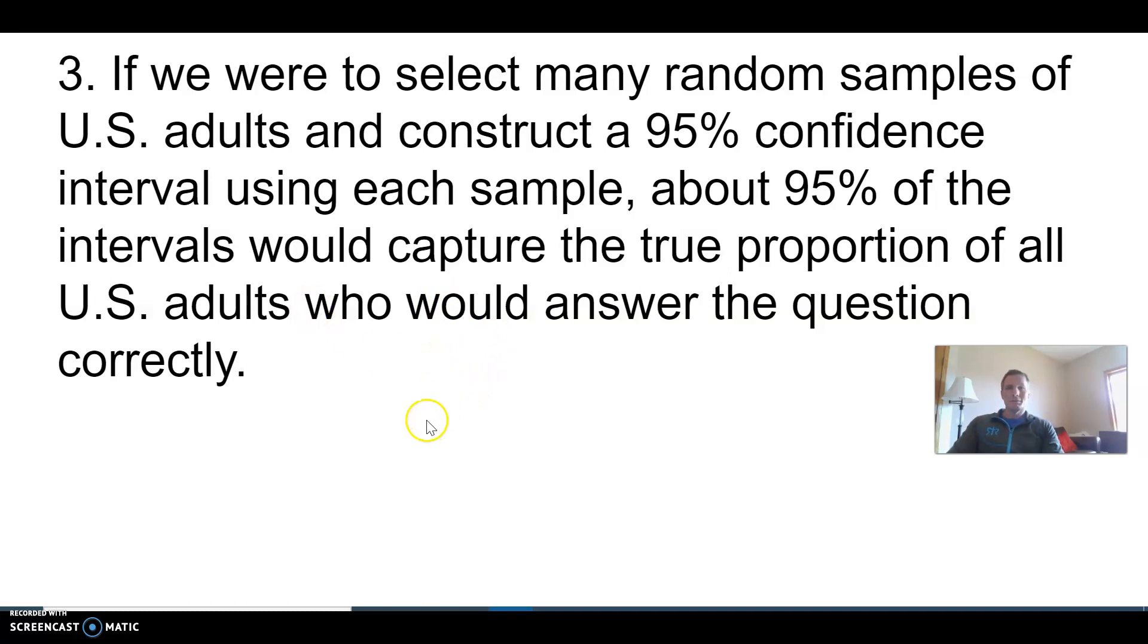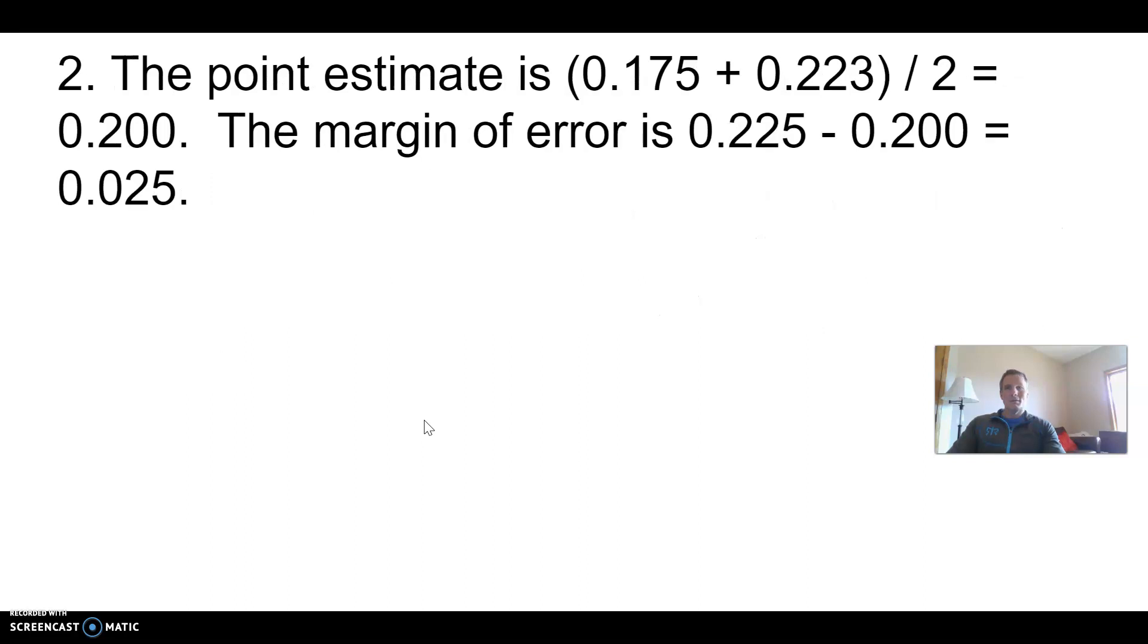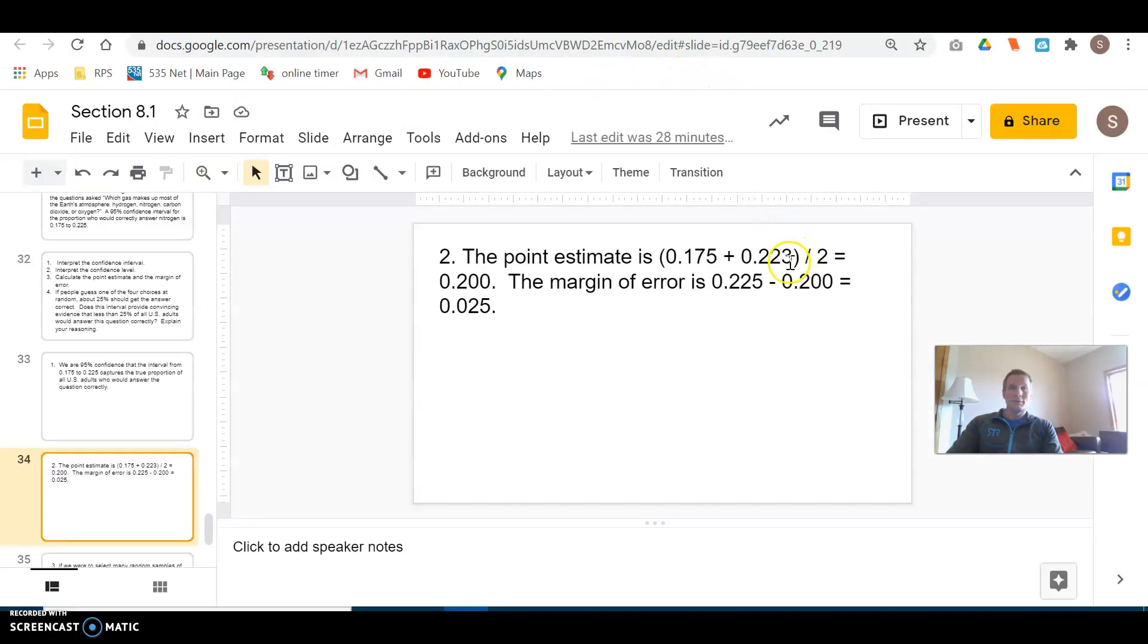Now the answer to number three. The point estimate - you've got to find it. Oh, that should be a 5, not a 3, sorry. You've got to average 0.175 and 0.225. Add them, divide by 2. Right in the middle is 0.200.